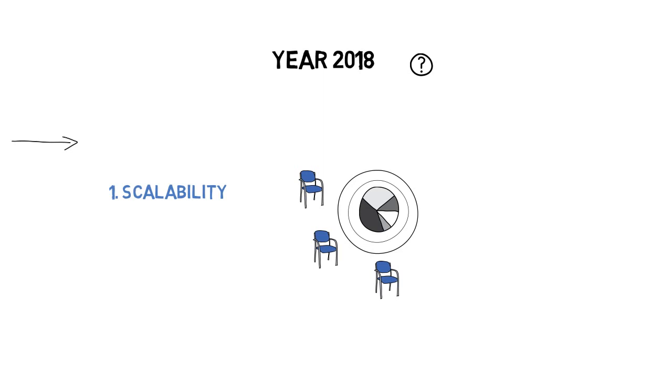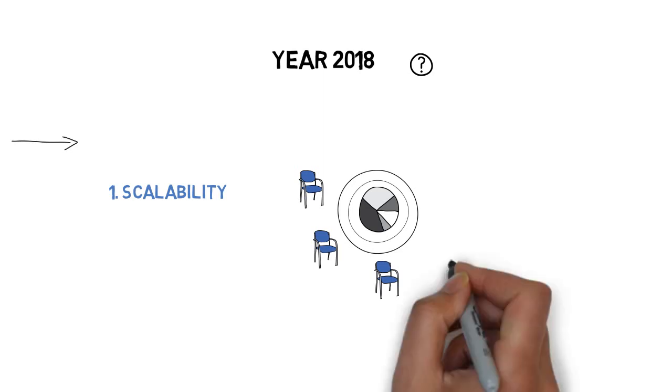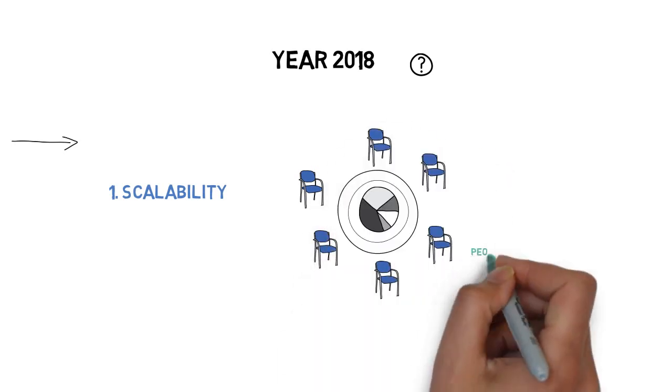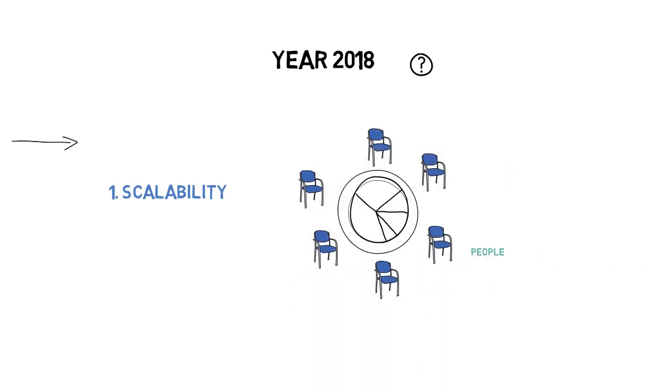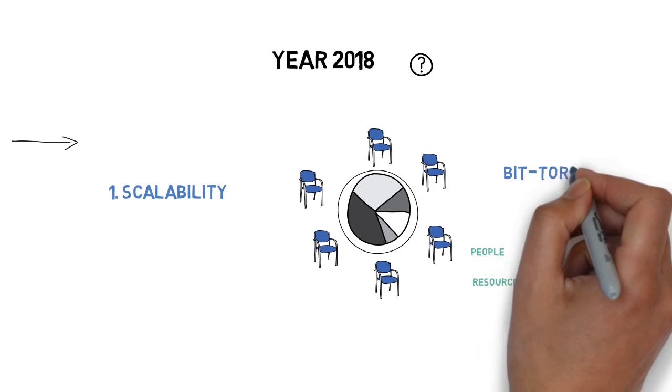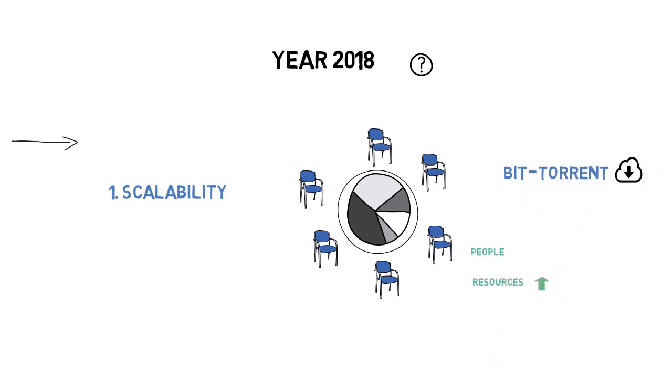But we don't want this. We want it to be scalable automatically. The more people we have, then the more resources the systems will get. Do we have an analogy in the internet? Yes, we do. The BitTorrent peer-to-peer downloading protocol in the internet has the scalable feature. The more people we have for the downloading file, the faster downloading speed we get.